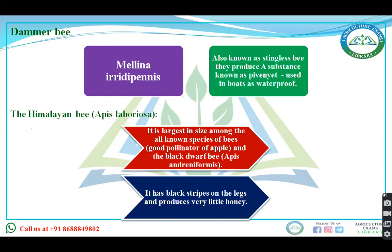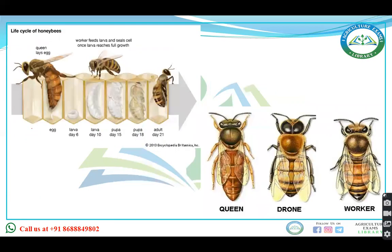The last one is the Himalayan bee — that is the largest among all the species. Note that Apis dorsata is the largest among the commercially cultivated species, while the Himalayan bee is the largest in size among all species of bee. They are also good pollinators of apple. Remember the scientific names as exam questions have been asked from this section.